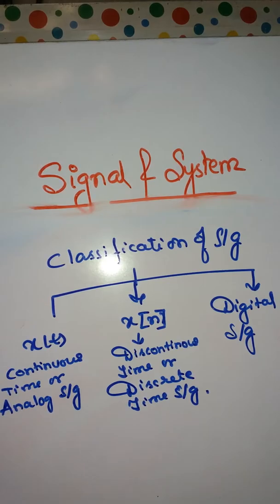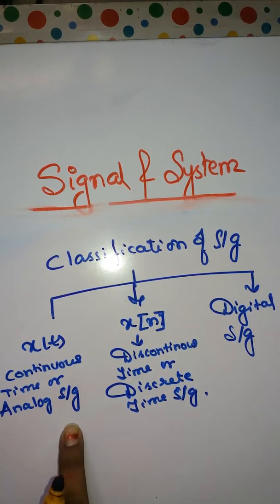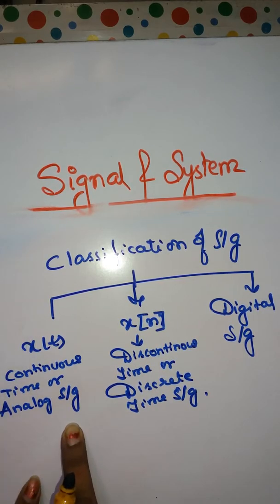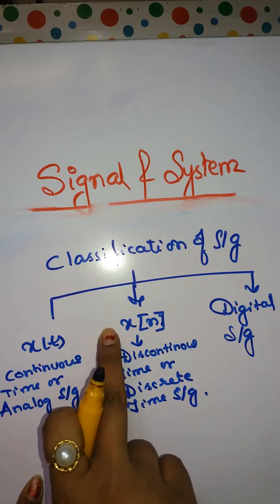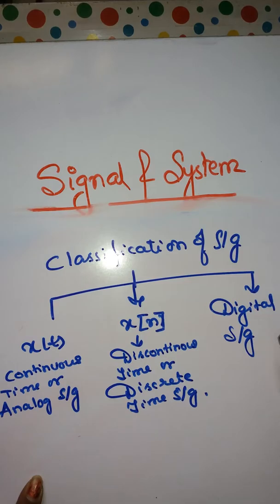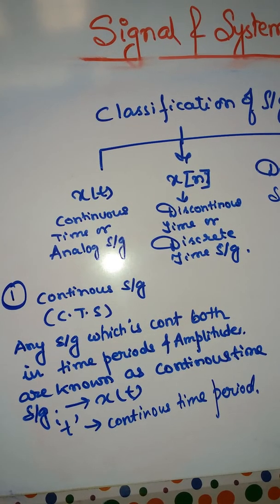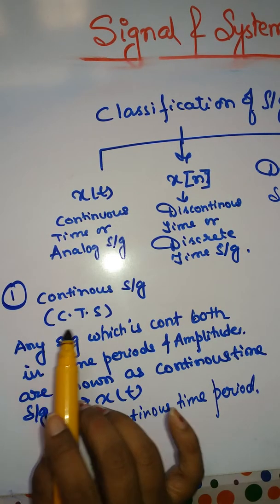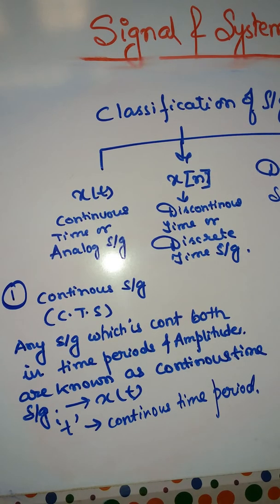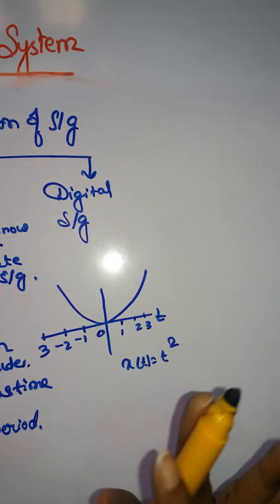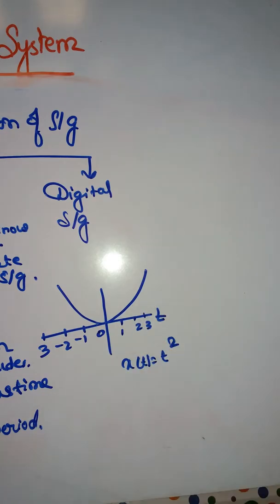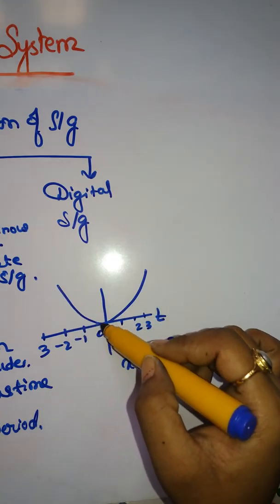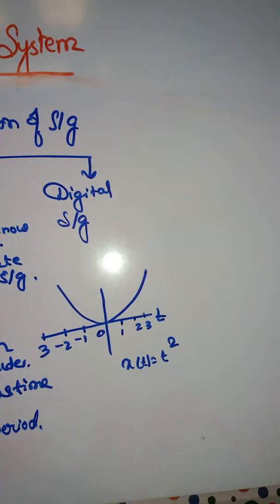Let's see the basic classification of signal. Continuous time or analog signal is given by x of t, and discontinuous signal is given by x of n. Continuous time signal is represented as CTS. Any signal which is continuous both in time period as well as amplitude is known as continuous time signal or analog signal. This is an example of a continuous time signal. It is not discreted, it is totally continuous from here to here. It is represented by x of t equals t square.